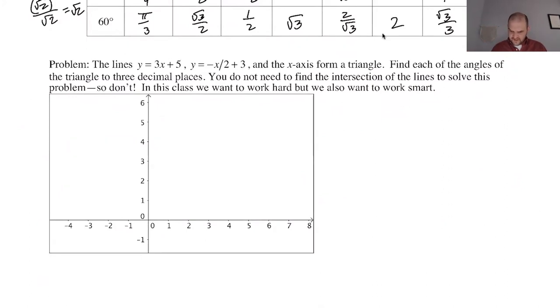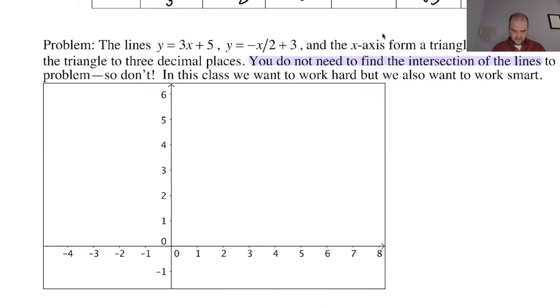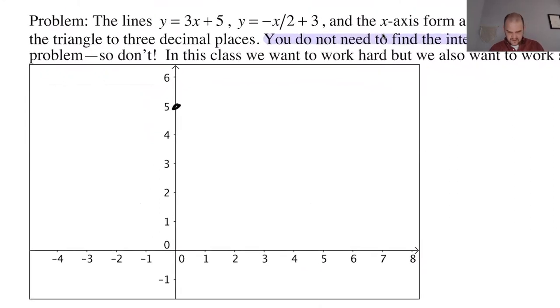Find each of the angles to three decimal places. Not a problem. You do not need to find the intersection of the lines. If a problem tells you that, don't waste your time doing it. That's a warning. So let's see if we can actually do this. I'm gonna graph y equals 3x plus 5. Try to do that correctly. There. And then I can't go, like, over 1 and up 3, so I'm gonna go back 1 and down 3, which should take me here.